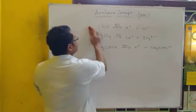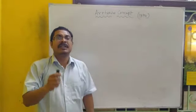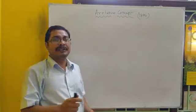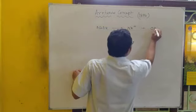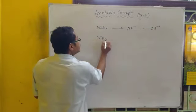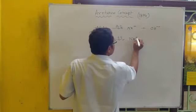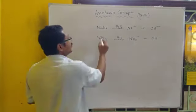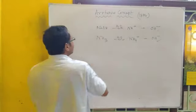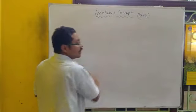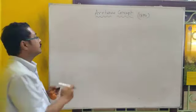Similarly, bases are the substances which dissociate in aqueous medium and give OH- ion. For example, NaOH dissociates into Na+ and OH-. NH3 also dissociates in water. It is important to note that all this dissociation occurs in aqueous medium only.